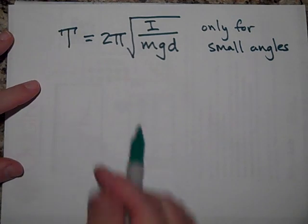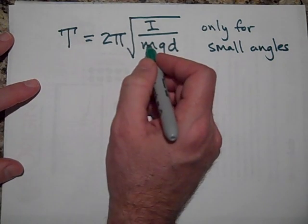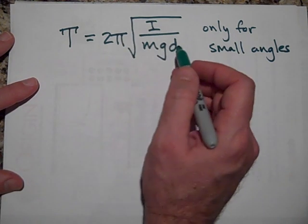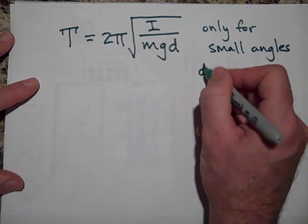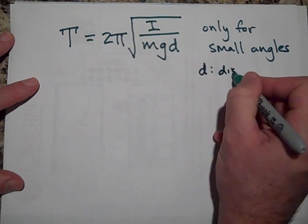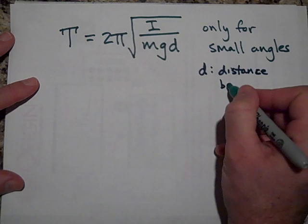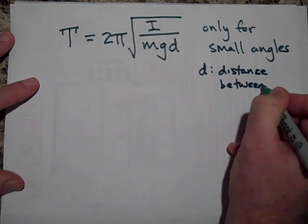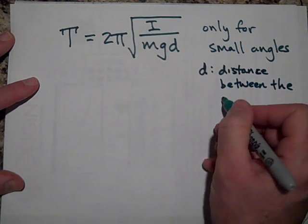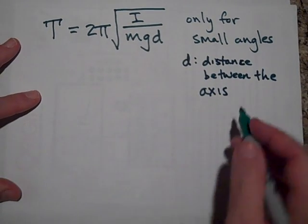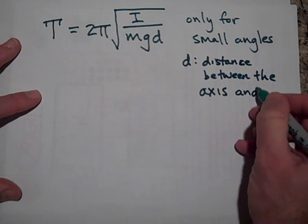The M is the mass of the entire thing. G is the constant, 9.8 meters per second squared if you're on Earth. And D is the distance between the axis and the center of mass.